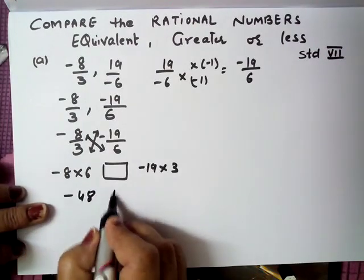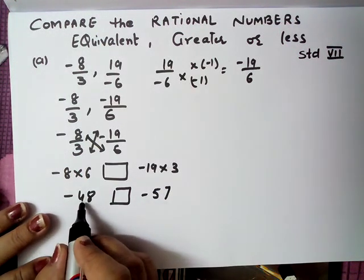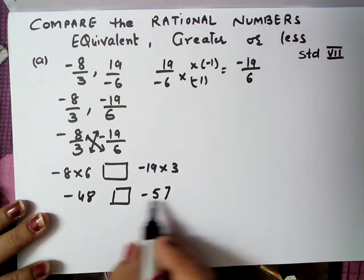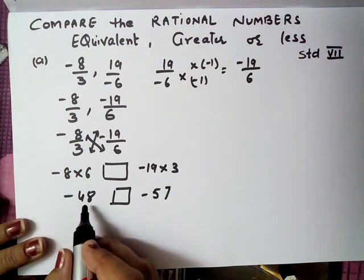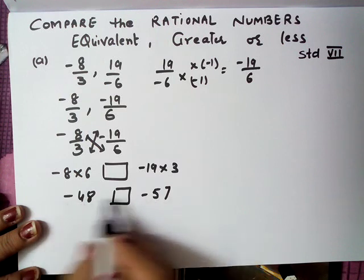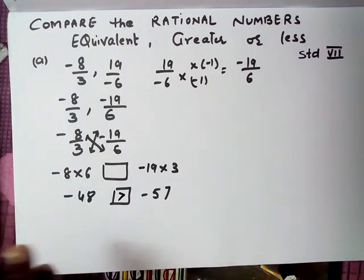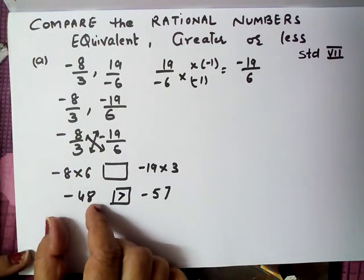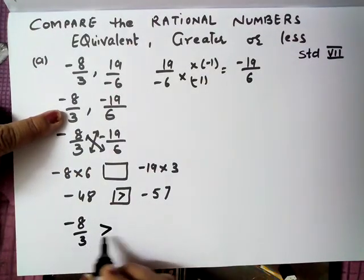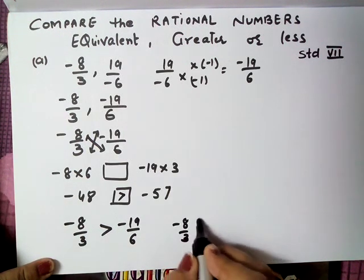So minus 48, it will be minus 57. Now you will see minus 48 and minus 57. Negatives mein jitna small number hota hai uski value zyada hoti hai — means negatives mein ulta hota hai. Agar positive hai toh 48 small hai, 57 big hai. But agar aapke paas dono negatives hain, toh minus 48 aapke paas big hai aur minus 57 small hai. So minus 8 upon 3 is greater than minus 19 upon 6.